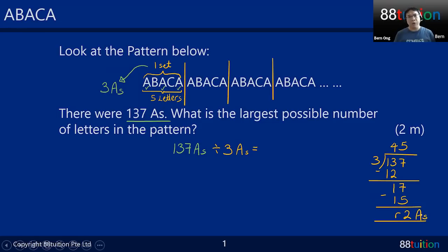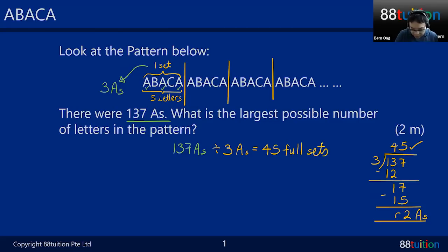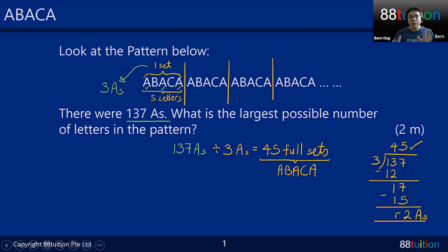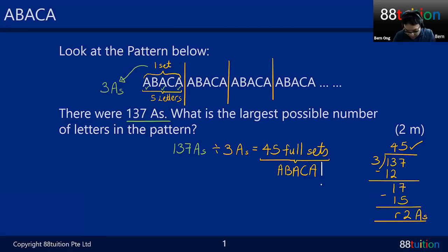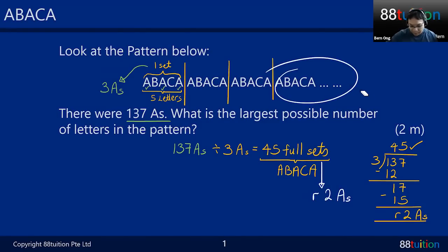So what does the quotient 45 mean? It means there are 45 full sets of A-B-A-C-A — 45 full sets of these five letters. And there is a remainder of two A's. Taking the last portion as an example: A, B, A, C, A — then we have two remaining A's appearing after it.